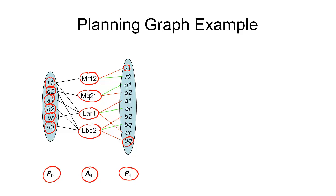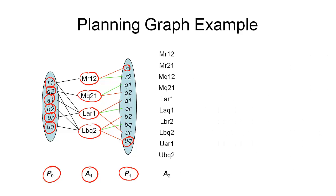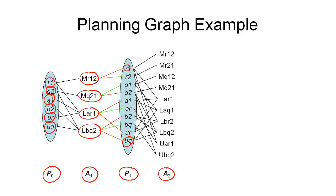We can now continue with action layer A2. We take proposition layer P1, interpret it as a state, and see which actions would be applicable — that list makes up action layer A2. We introduce edges or arcs from P1 to A2 representing all the preconditions of these actions.